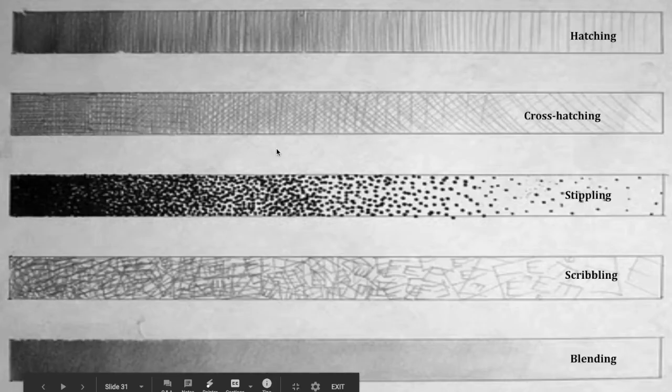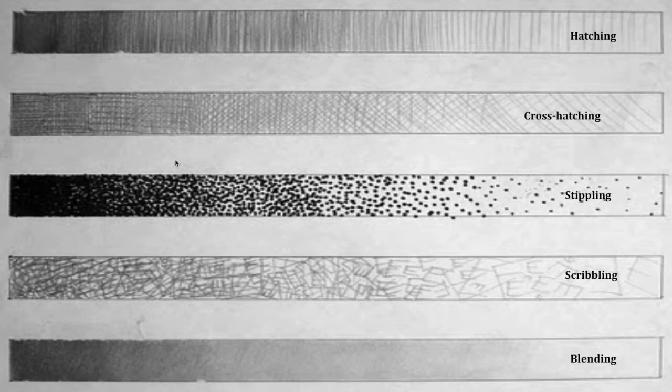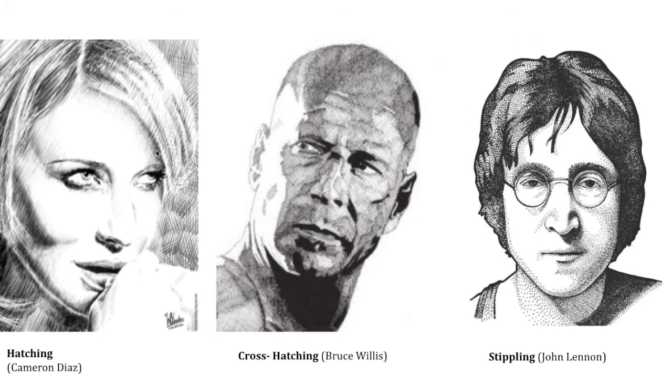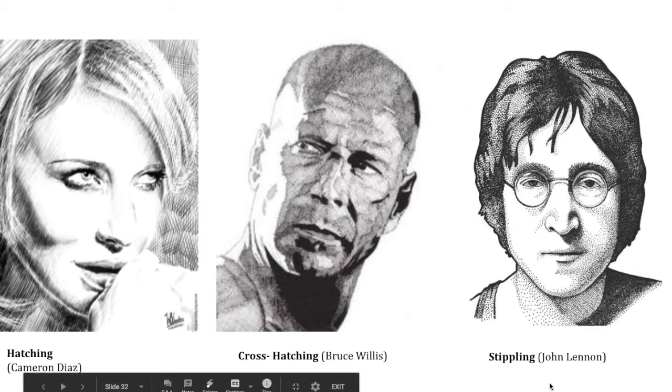All right. Here's that all blown up for you. So you can kind of see it there too. And then here's the different types in action. So you've got this John Lennon and the stippling, the dots. Gosh, that must have taken forever.